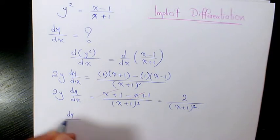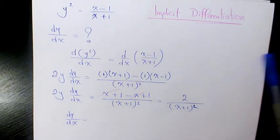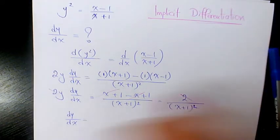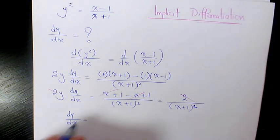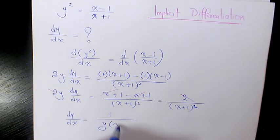So dy over dx equals—we can divide by 2 from both sides—so it's going to be 1 over y times x plus 1 squared.